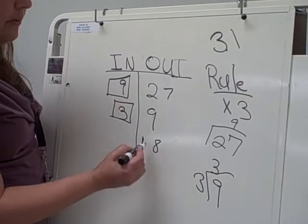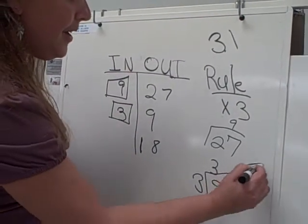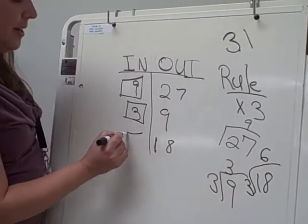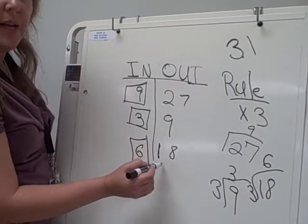To find the out of 18, 18 divided by 3 is 6. So our in will be 6. 6 times 3 equals 18.